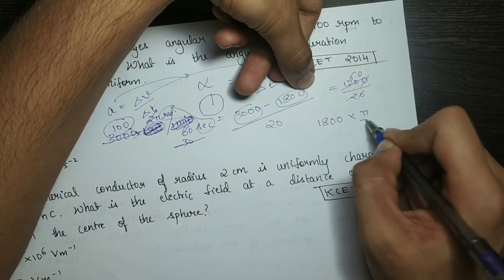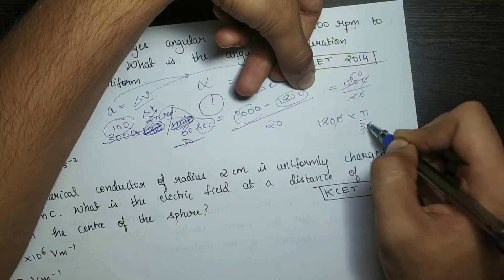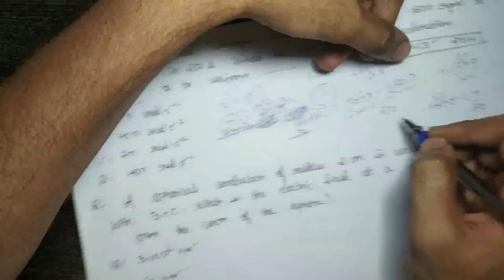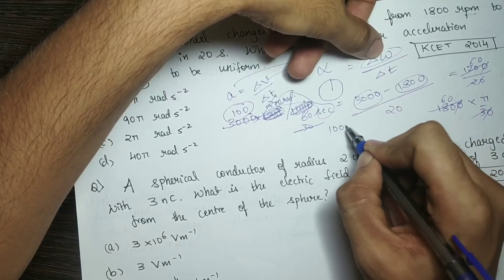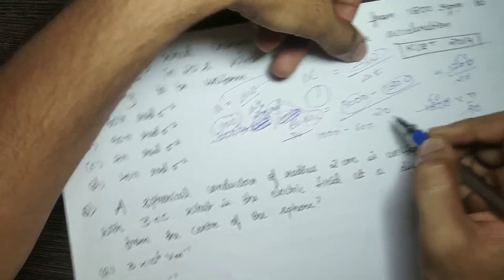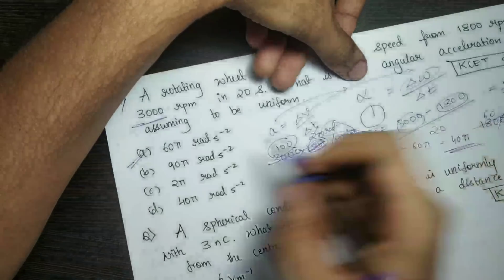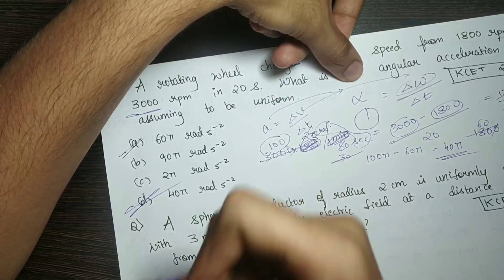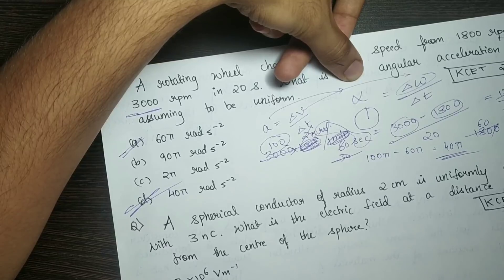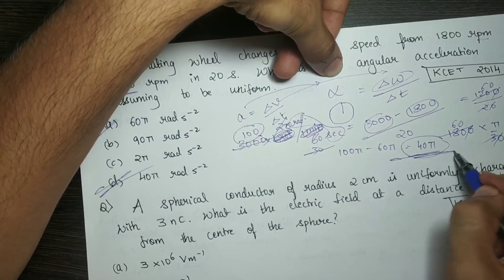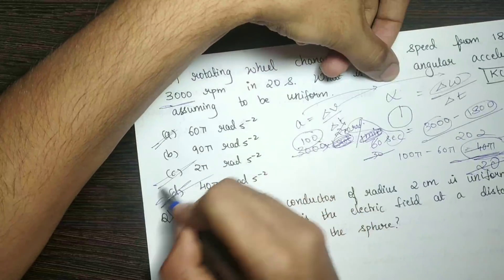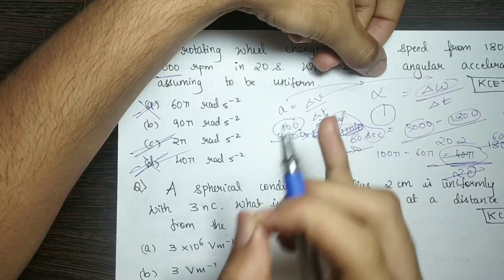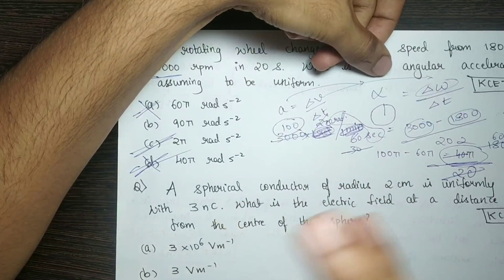And 1800 × π/30 = 60π. So the change in angular velocity is 100π minus 60π, which equals 40π radians per second. Dividing by time: 40π divided by 20 gives 2π radians per second squared. Answer option C.